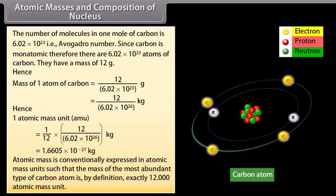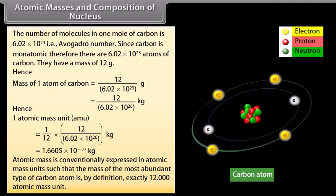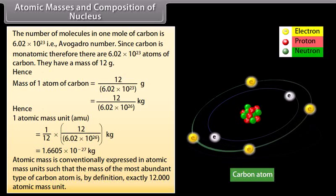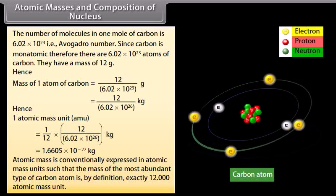Atomic mass is conventionally expressed in atomic mass units such that the mass of the most abundant type of carbon atom is, by definition, exactly 12 atomic mass units.